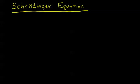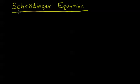In this video we're going to talk about the Schrödinger equation. All the Schrödinger equation is is the wave equation for matter waves — looking at matter as waves in quantum mechanics. It's the main tool we use in quantum mechanics to analyze systems.